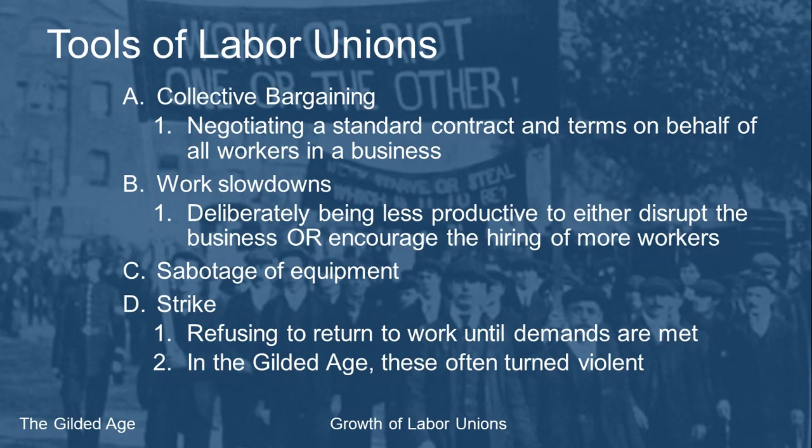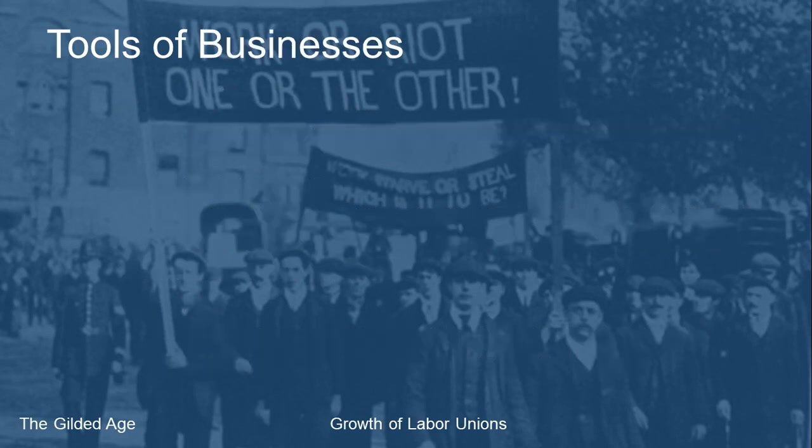During the Gilded Age, strikes usually resulted in violence, so going on strike wasn't something workers did on a whim — they thought about it and planned. They preferred negotiation because they knew when they voted to strike there would be violence, and it was entirely possible not everyone would come through it — somebody might die.